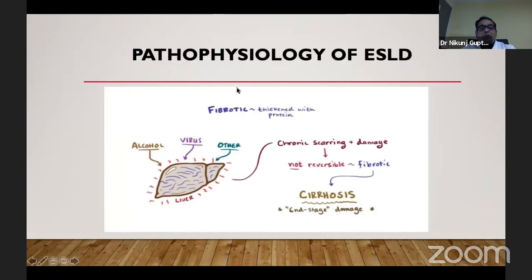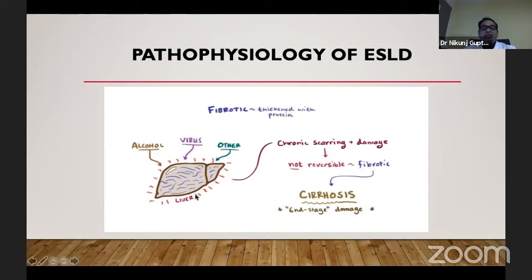Eventually, fibrotic changes come and it becomes a cirrhotic, end-stage liver, and the pathophysiology becomes irreversible. When the toxins, viruses, or alcohol affect the hepatocytes, macrophages and fibrous plugs start accumulating. They compress the veins, causing back pressure to the portal vein and hepatic vasculature. Fluid moves out of the peritoneal cavity — this is known as ascites. The back pressure also causes renal vasoconstriction and leads to hepatorenal syndrome, along with congestive splenomegaly.